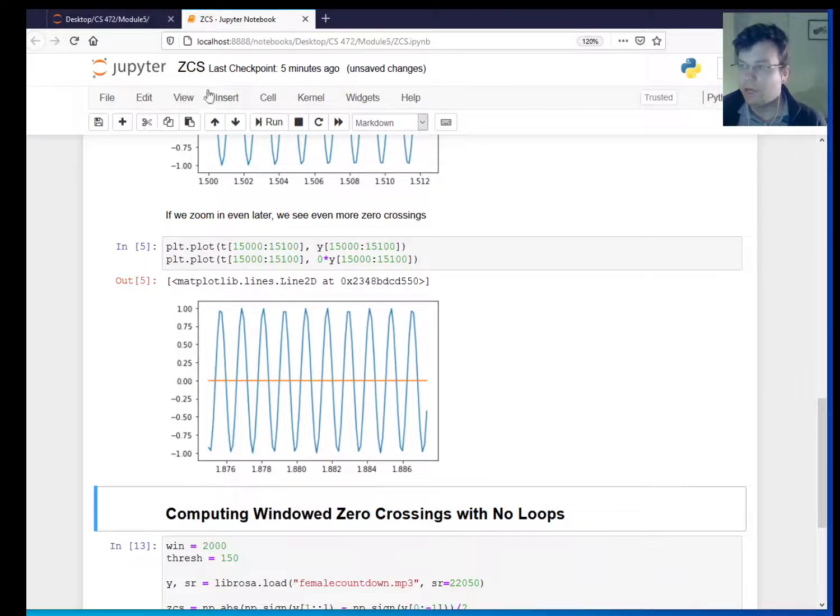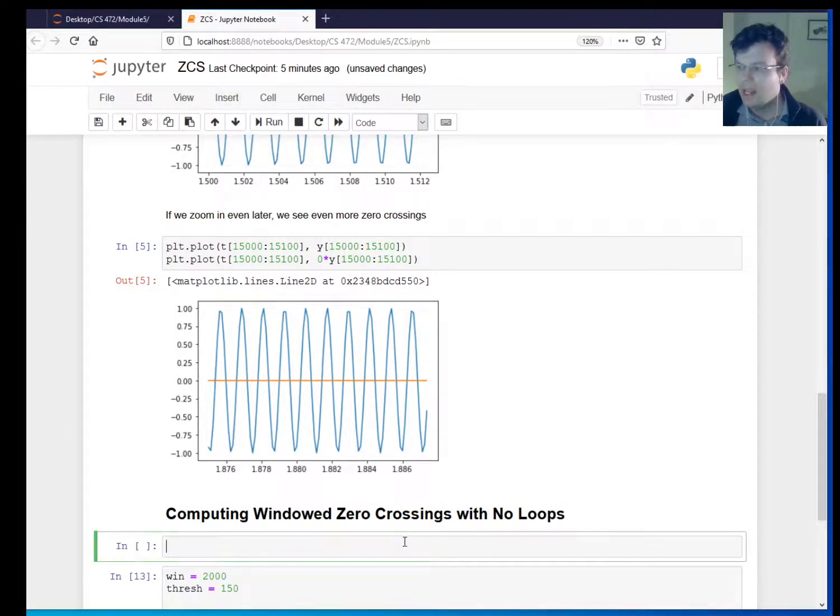Now you have to look in a window around each sample because you need a little bit of time history to actually count the zero crossings. So I want to talk about how to do this now without using any loops. And to really understand this, you have to understand the cumulative sum and how it's like an integral.